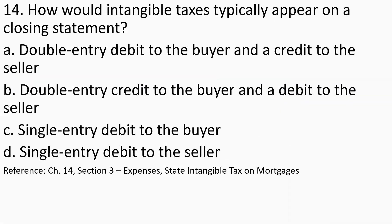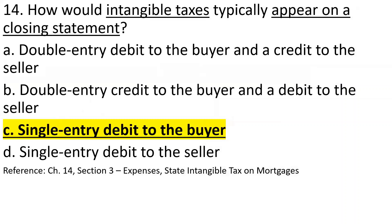Number fourteen: Intangible taxes typically appear on a closing statement as a single entry only — a debit to the buyer. The buyer pays the intangible tax to the state, which is a third party not involved in the transaction. So it is a single line entry debited to the buyer.